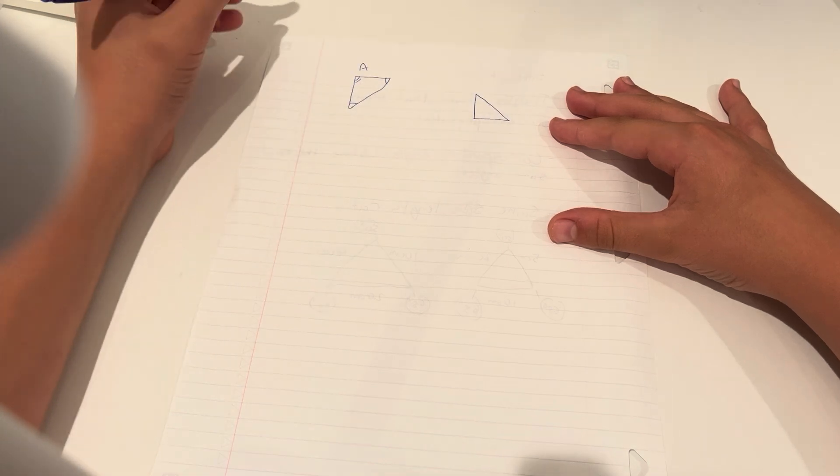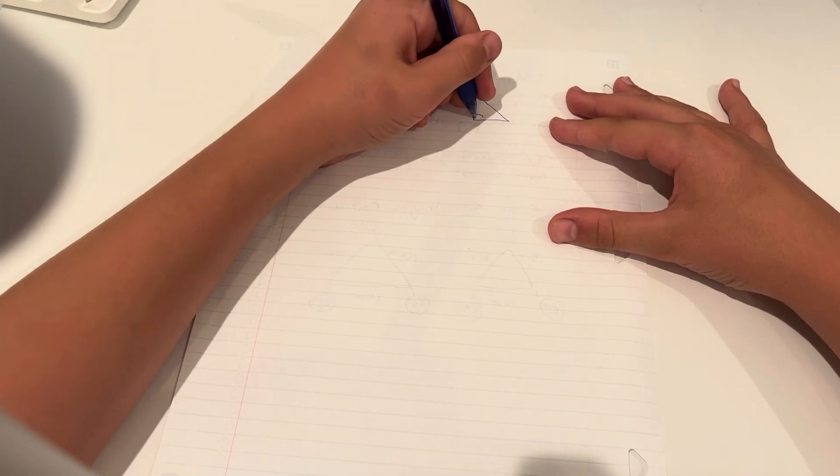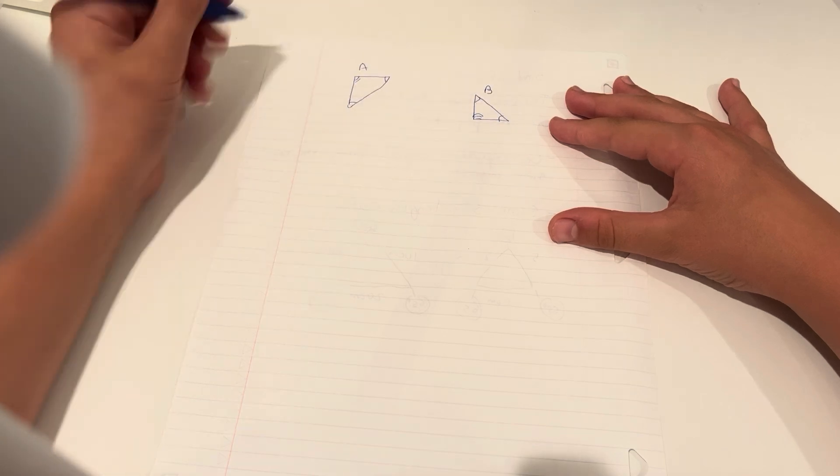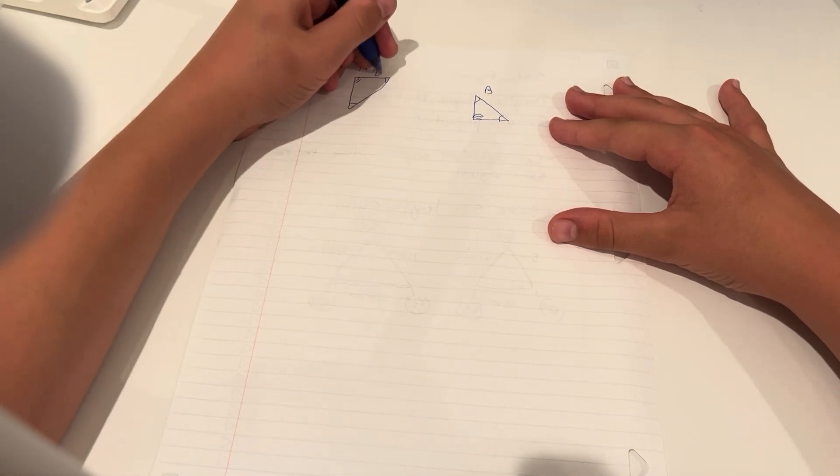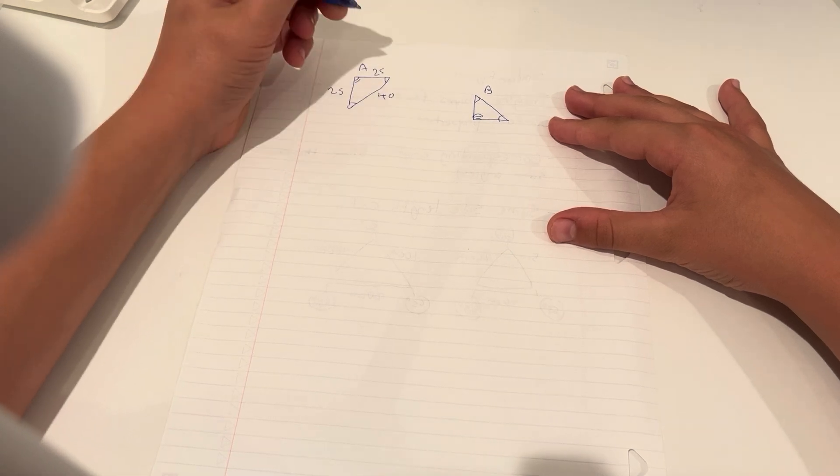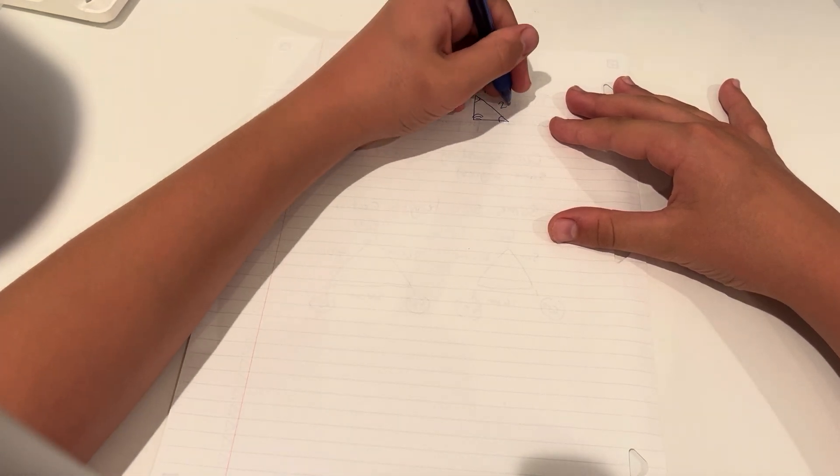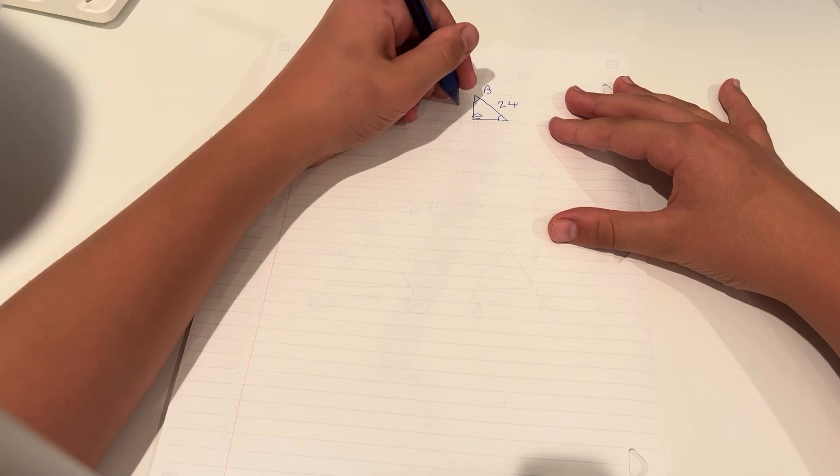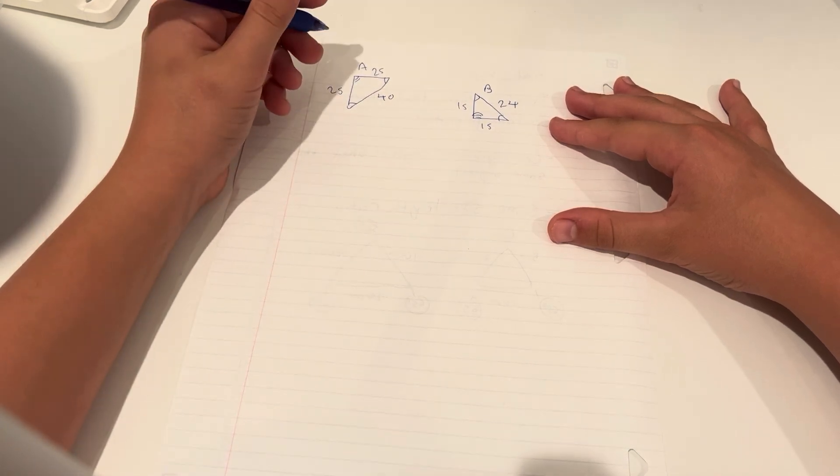Okay. And figure B. Okay. So the side length here is 25, the side length here is 25, and the side length here is 40. The side length here is 24. The side length here is 15, and the side length here is 15 as well.